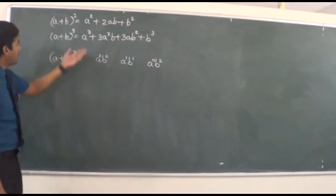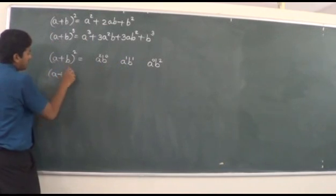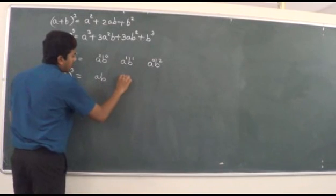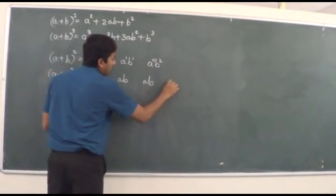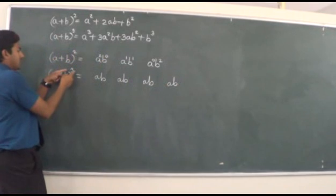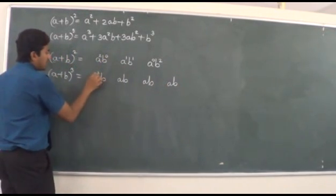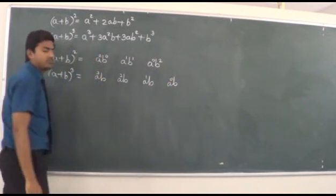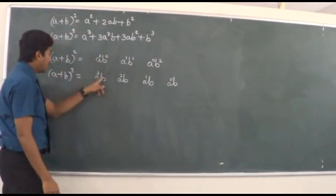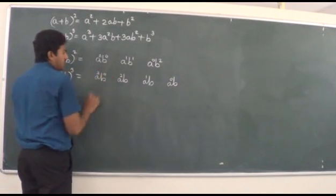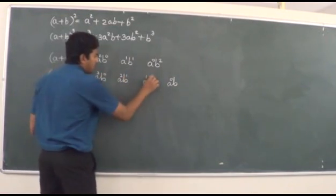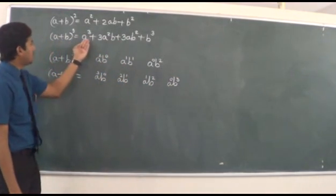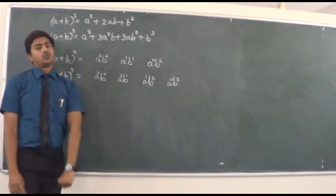For (a+b)³ we write four times: ab, ab, ab, ab. Power 3 is given to the first term, then reduced by 1 each step. b's power starts at 0 and increases by 1 each step. This gives us a³, a²b, ab², b³.